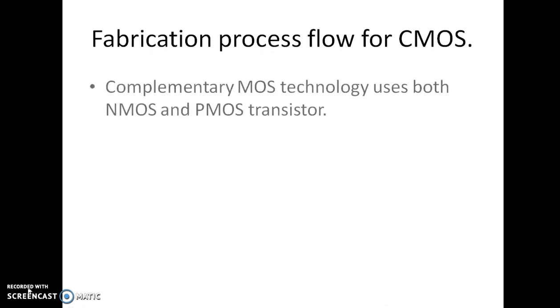Good morning friend. Today we will discuss the fabrication process flow of CMOS. CMOS means complementary MOSFET technology — it uses both NMOS transistor and PMOS transistor. So complementary MOSFET consists of two types of transistors: NMOS transistor and PMOS transistor.